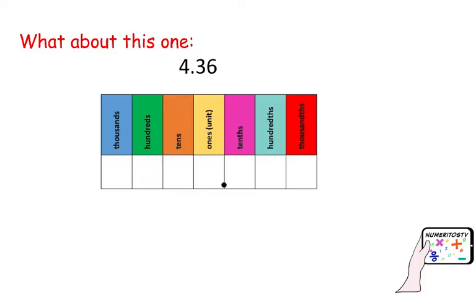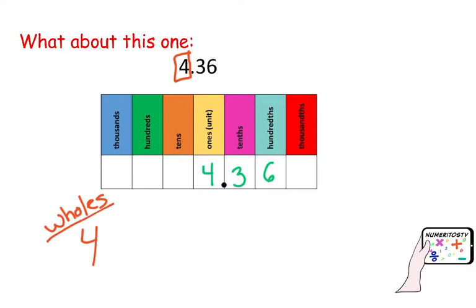What about 4 and 36 hundredths, or 4.36? Now we have a whole number. Again, we are going to use our place value chart. In this case, we do have a unit — that is 4 — and then we have a 3 in the tenths and a 6 in the hundredths. Our 4 is going to be our whole number, so this is going to be a mixed fraction. I am going to set aside my whole, which is 4, and then convert 36 hundredths into a fraction. Focus on the last digit: 6 is in the hundredths place, so that will be my denominator. Thirty-six hundredths will be the fractional part.